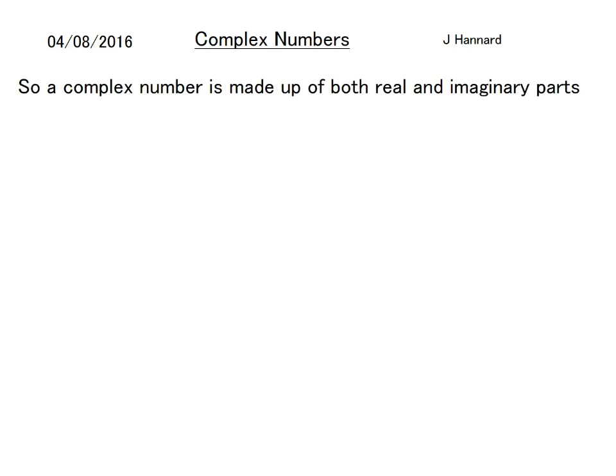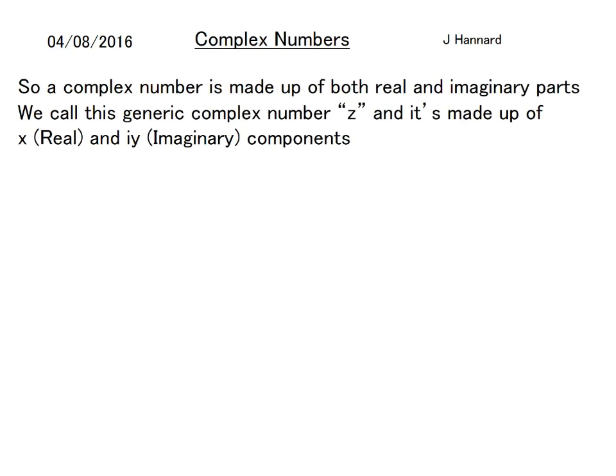So a complex number is made up of both real and imaginary parts. We call this generic complex number z. It's made up of x which is real and iy which is the imaginary component. So z = x + iy. That's the real part and that's the imaginary part.